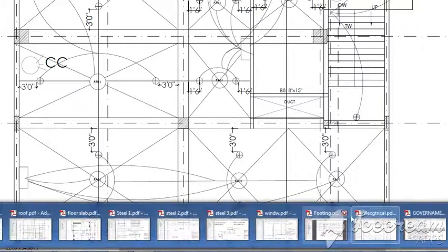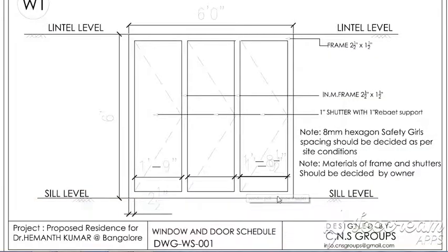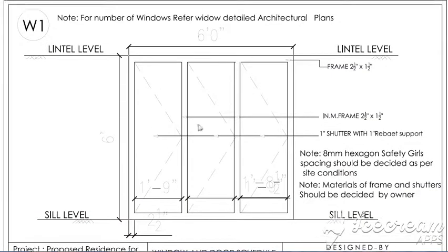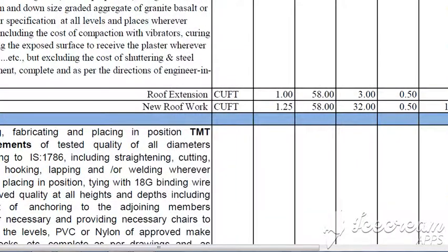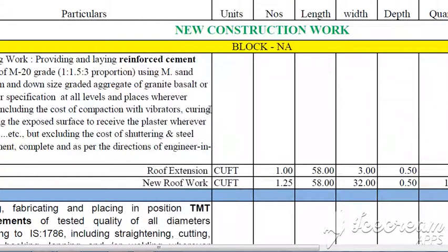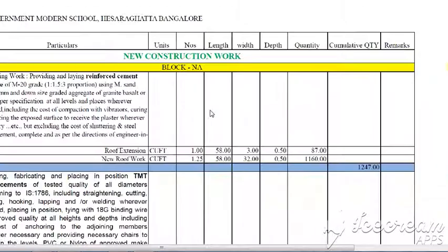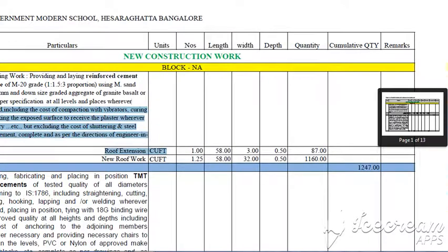Apart from this, even carpentry works will also be given due importance. This is a simple window wherein you can see each and every detail mentioned specifically. The quantity takeoffs from this and preparation of BOQ for particular window, door elements and other elements of carpentry will be covered. Your detailed BOQ will be somewhat like this, and preparation of a BOQ like this would be very important when you step into the role of a quantity surveyor.